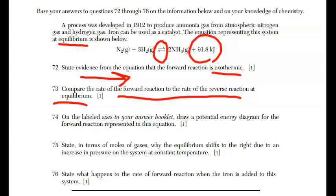For 74, it says on the labeled axes in your answer booklet, draw a potential energy diagram for the forward reaction represented in this equation. We're not going to do the answer booklet. I'm going to just go ahead and change the color here. I'm going to put an axis here. Now the forward, remember, is exothermic. So that means we start with a higher energy. We end with a lower. The main thing is don't forget that there's always activation energy. So there's always going to be that kind of rise or little hill in the middle of the potential energy diagram. That's it for 74.